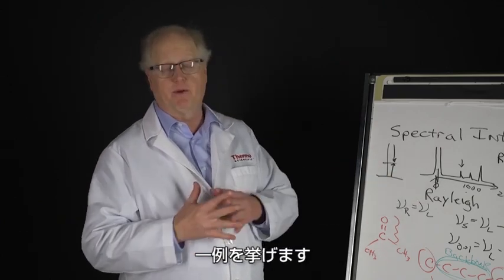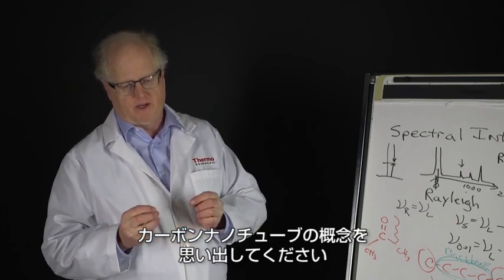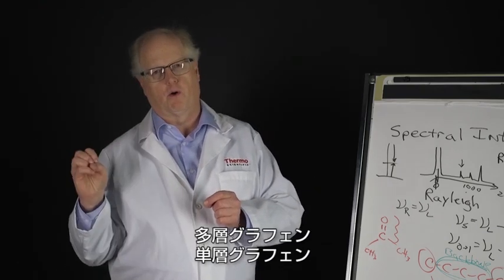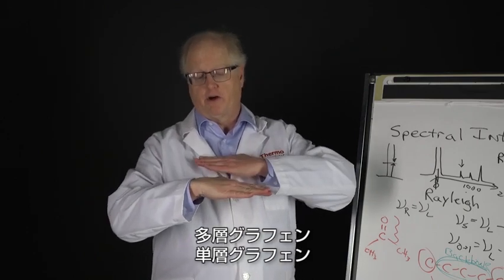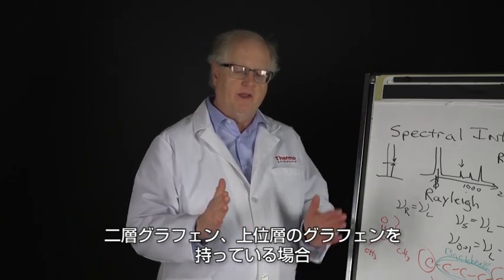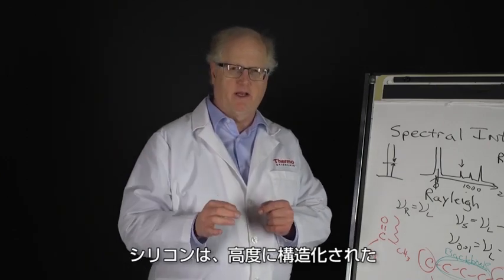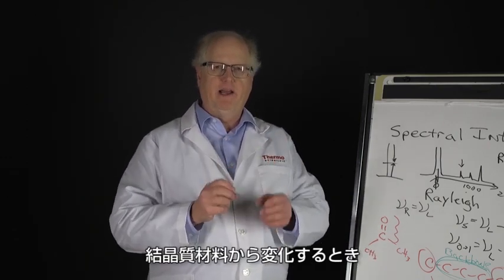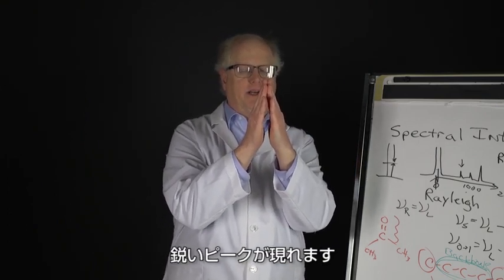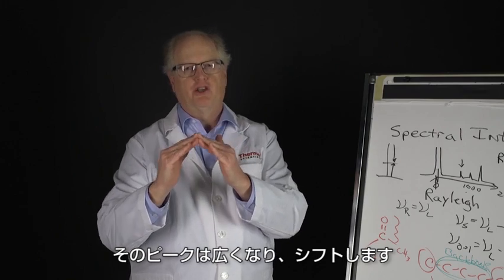An example, getting back to something we mentioned a few moments in one of the earlier videos, was the idea of carbon nanotubes. When you have a single wall, a double wall, or a multi-layer graphene, single-layer graphene, double-layer graphene, higher orders, layers of graphene, the peaks in those spectra shift and actually show those changes. Silicon, when it goes from a highly structured crystalline material, it has a sharp peak. As it goes from that crystalline to an amorphous, the peak broadens and shifts.